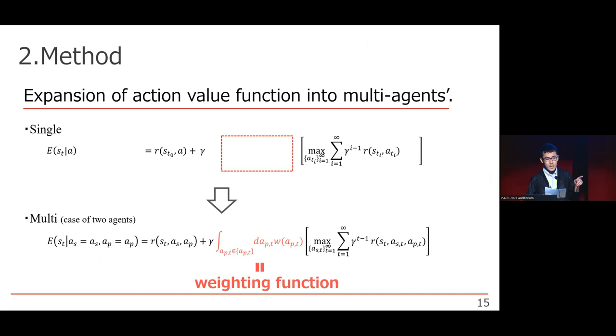Q-value presented in previous study was only for single agents. So we expanded it into multi-agent model. The biggest difference is the entry of weighting function to other's choices and integration function.